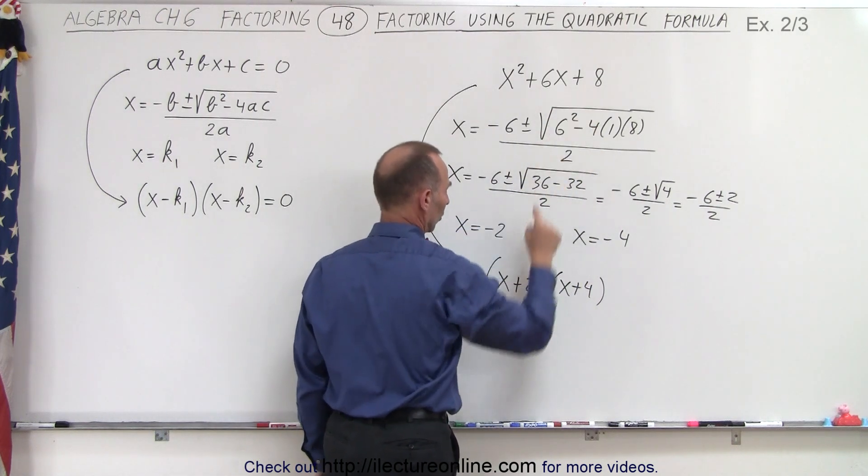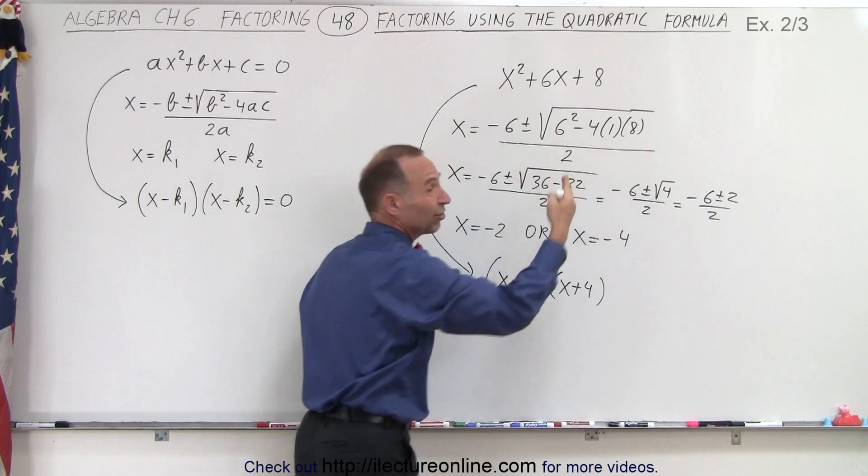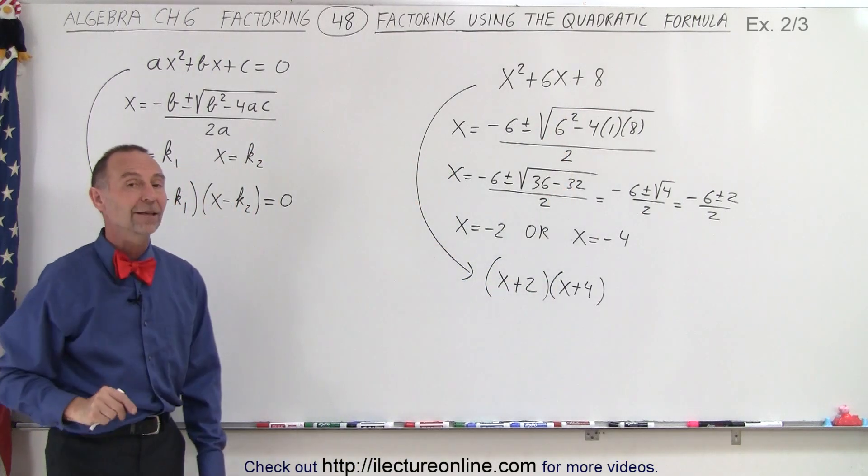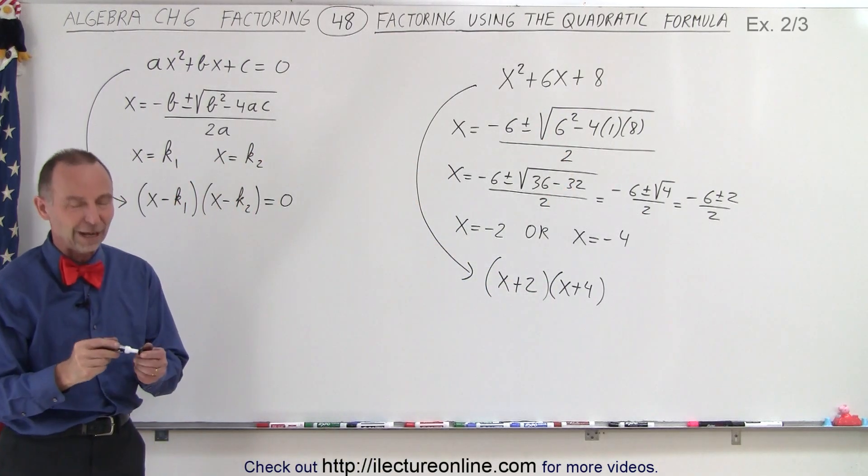2 times 4 is indeed 8, 2 plus 4 equals 6, so we can check and see that we did it correctly, and that is how it's done using the quadratic formula.